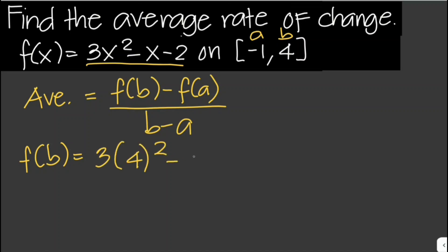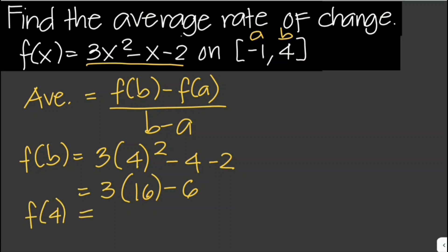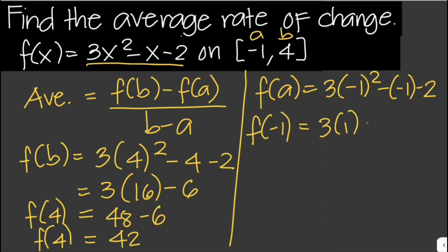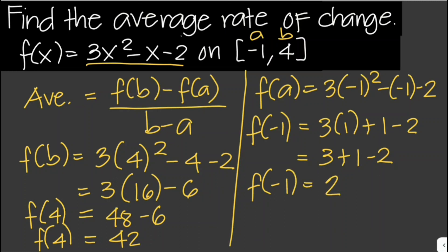That would be 3 times 4 squared minus 4 minus 2, which is 3 times 16 minus 6. So f of 4 is equal to 48 minus 6, which equals 42. Now we solve for f of a, where a is equal to negative 1. We plug in negative 1: 3 times negative 1 squared minus negative 1 minus 2. So f of negative 1 is 3 times 1 plus 1 minus 2, which is 3 plus 1 minus 2. Therefore, f of negative 1 is 4 minus 2, which equals 2.